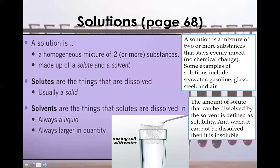Now there are two other things we are going to study: solubility and insolubility. When a solute is completely dissolved in the solvent, we say it is soluble. Solubility is the amount of solute that can be dissolved by the solvent. For example, when you add one spoon of salt in water, it dissolves and is soluble.